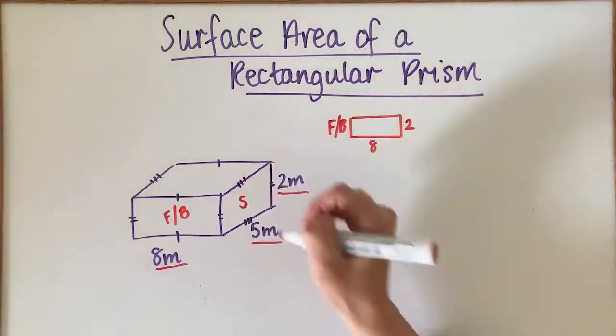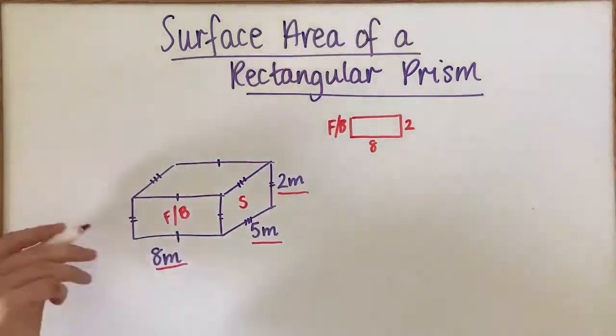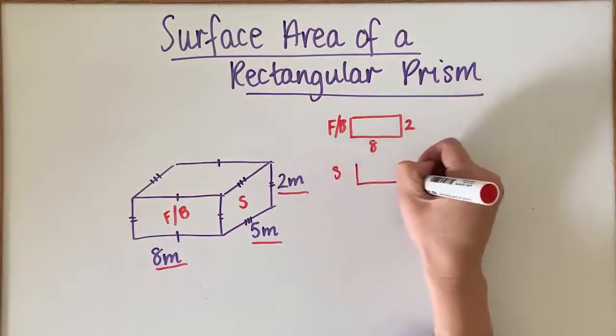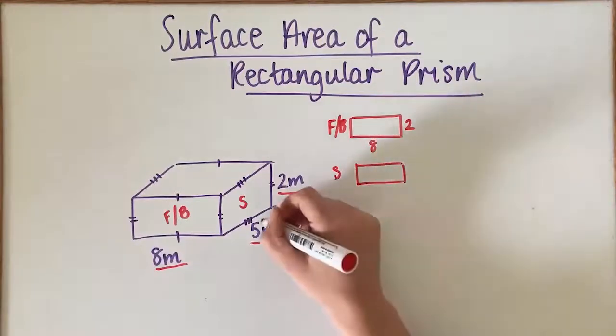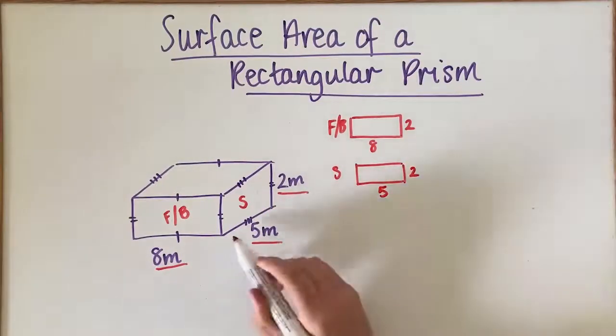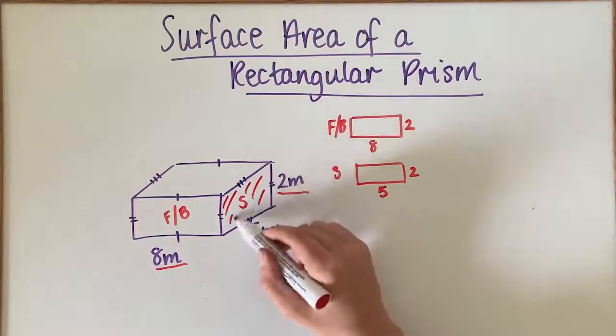I've also got the sides here, so I've got a side here and this side here. We can call these the sides, and they're going to be 5 across and 2 up, so they're 5 across here and 2 up, and that would give us this whole side here.